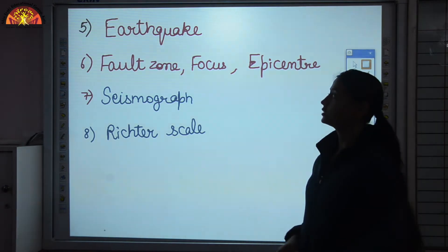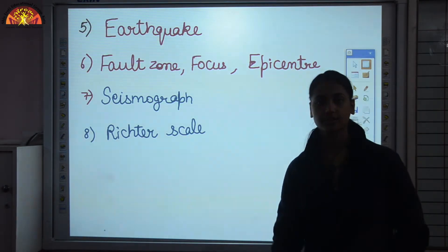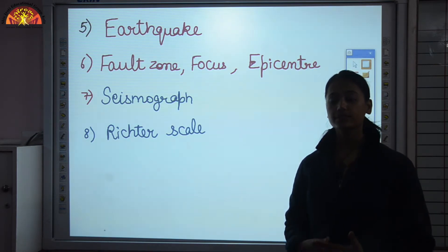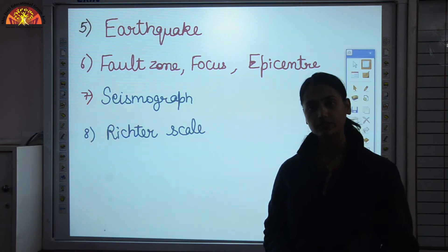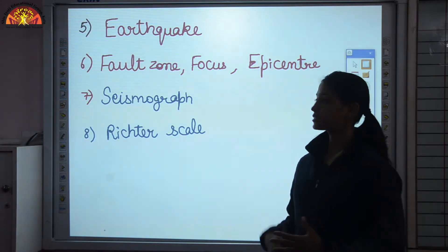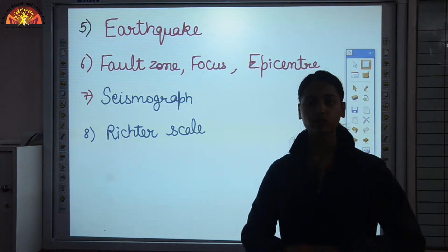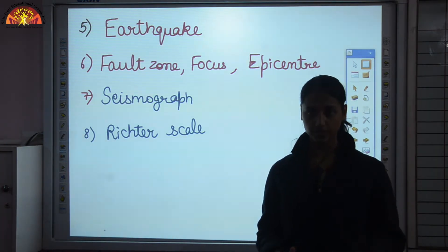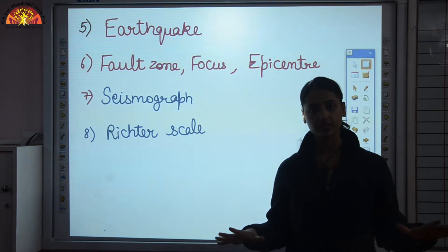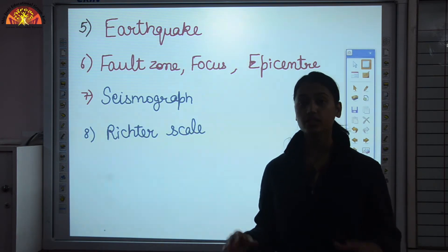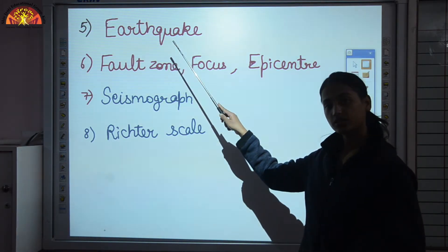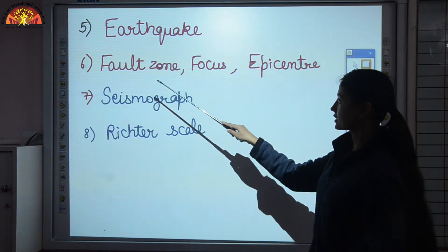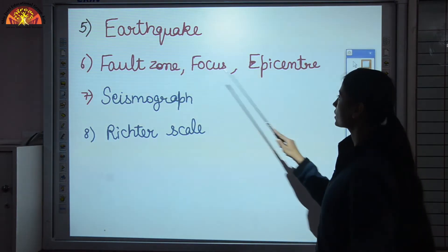In the second part of this chapter we dealt with earthquakes. An earthquake is a natural phenomenon — a natural disaster. The sudden movement in the earth's crust is known as an earthquake. The top layer of earth, which is the crust, is not a single piece of land; many fragments and plates are present. Because of the disturbance of those plates, earthquakes are caused. Three terms we discussed are: fault zone, focus, and epicenter.